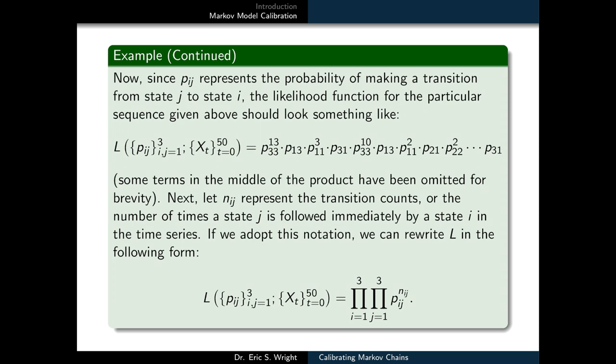Then we'd look for p12. How many times did we make a transition from state 2 back to state 1? Well, that's going to be n12, and we would insert a p12 to the n12 in our product. And we follow that until we cover all possible transition probabilities, and the result is our likelihood function.